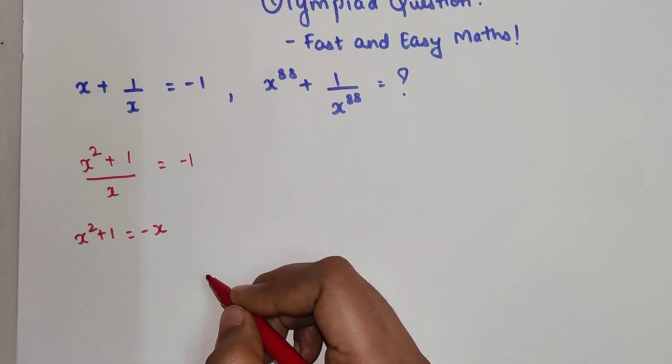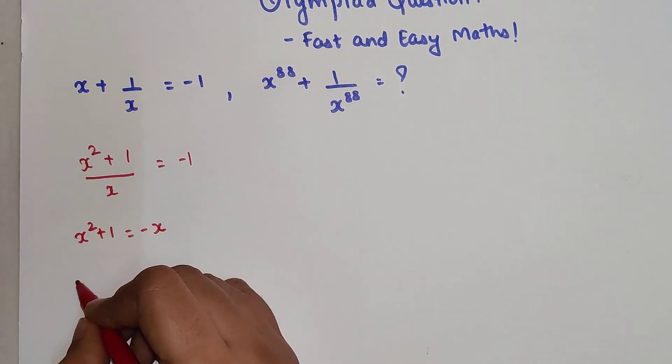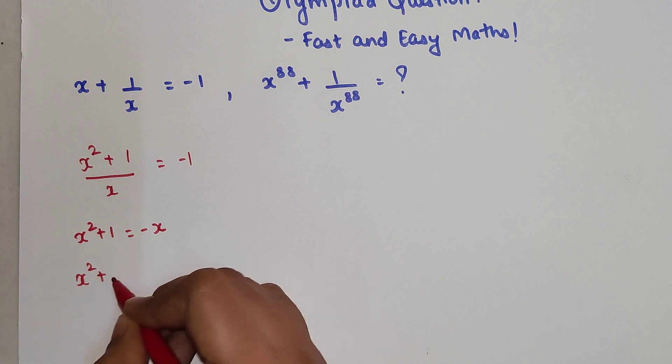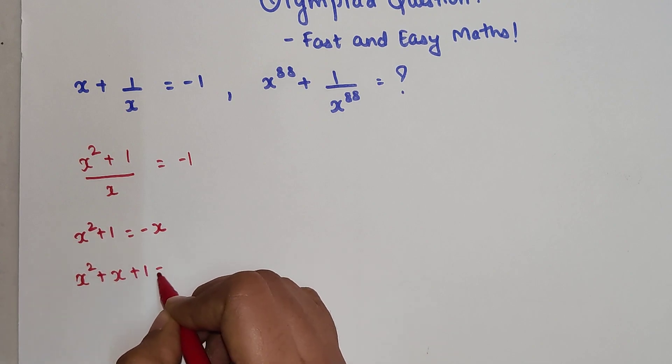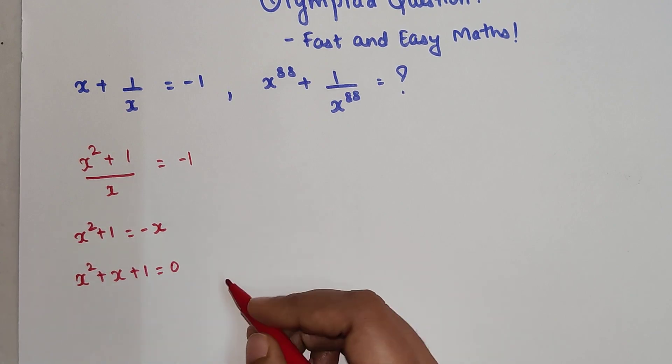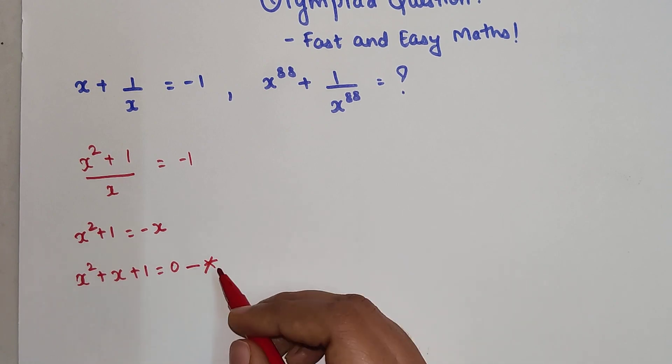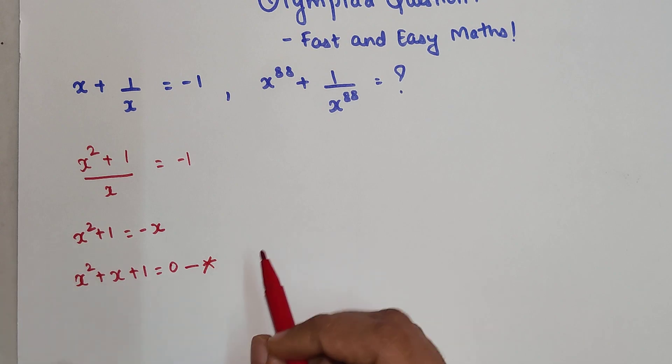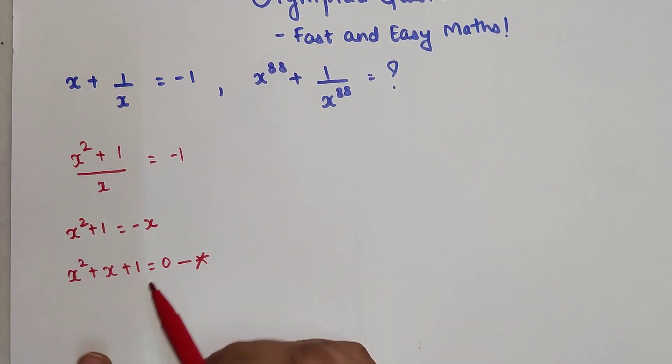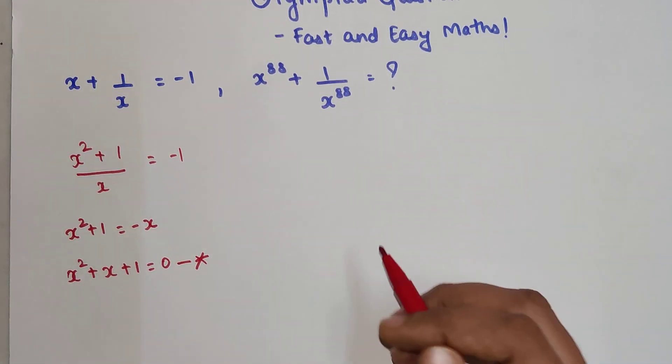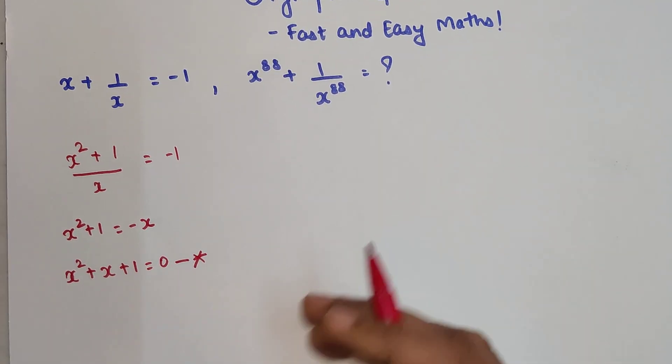Now if we shift everything on this side we get x² + x + 1 = 0. This is your point of extreme importance, because if you know this then you will know how to solve this entire question.